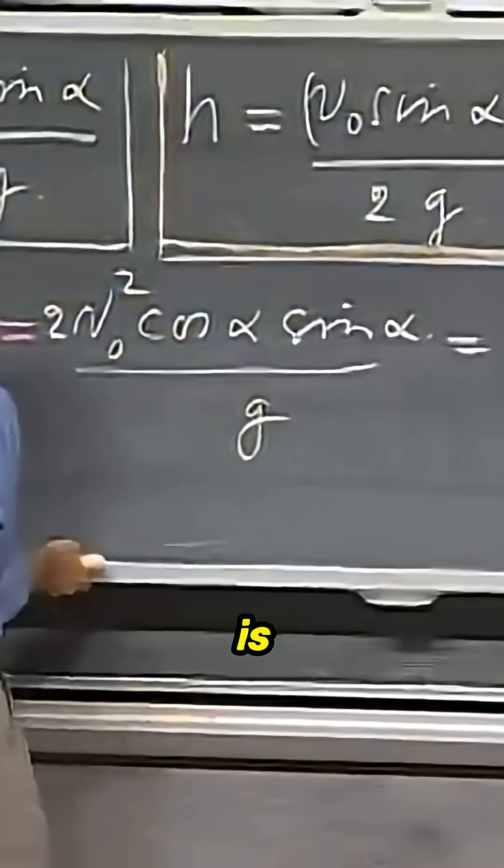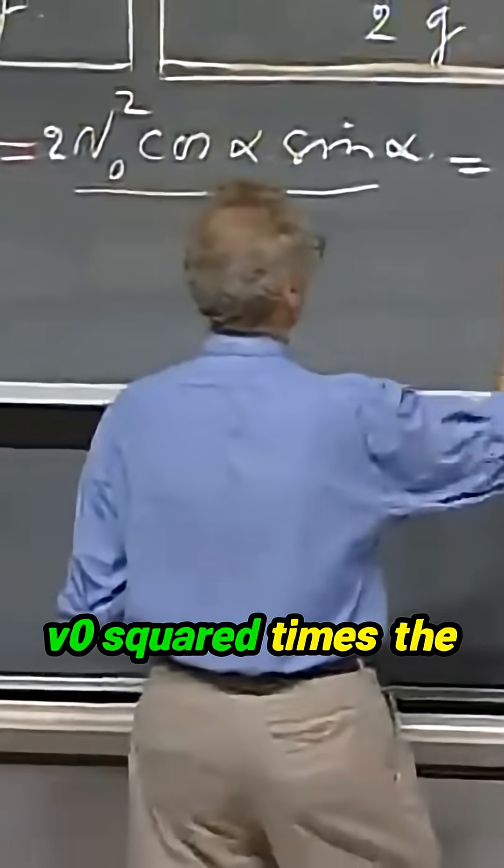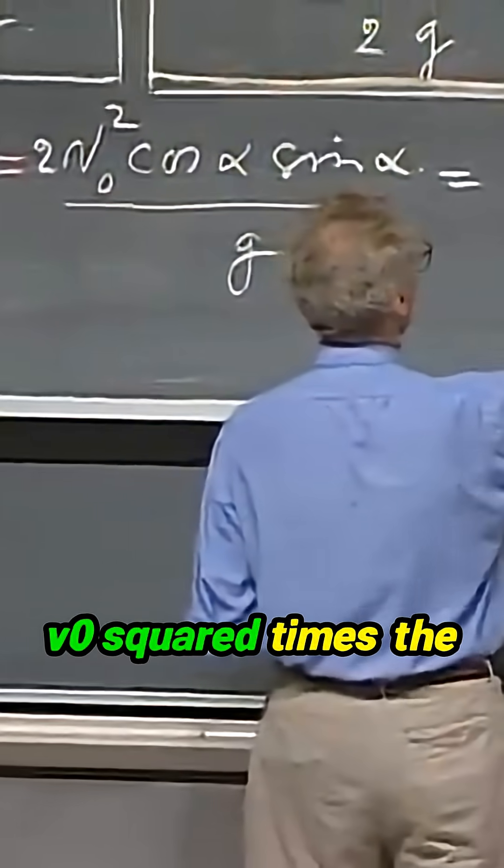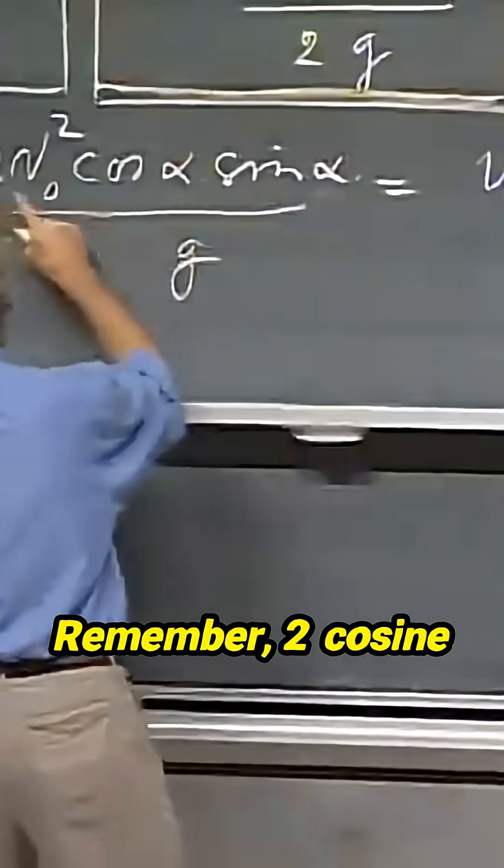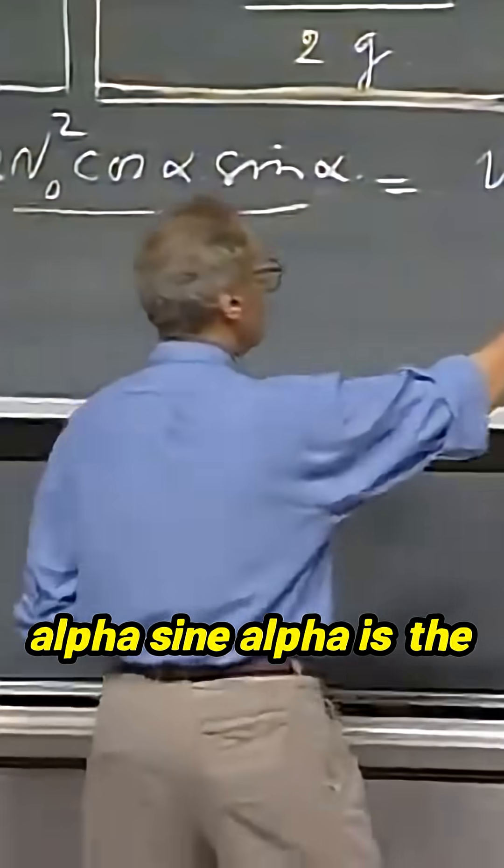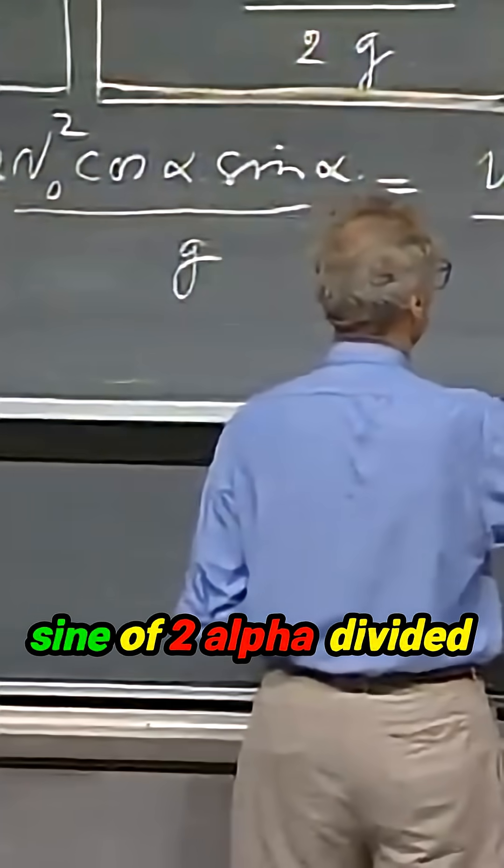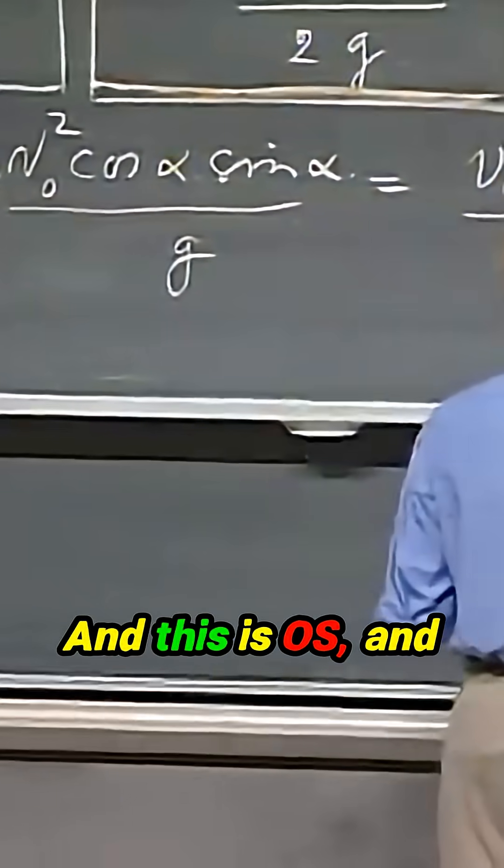And so the answer is v zero squared times the sine of the double angle. Remember, two cosine alpha sine alpha is the sine of two alpha divided by g. And this is OS.